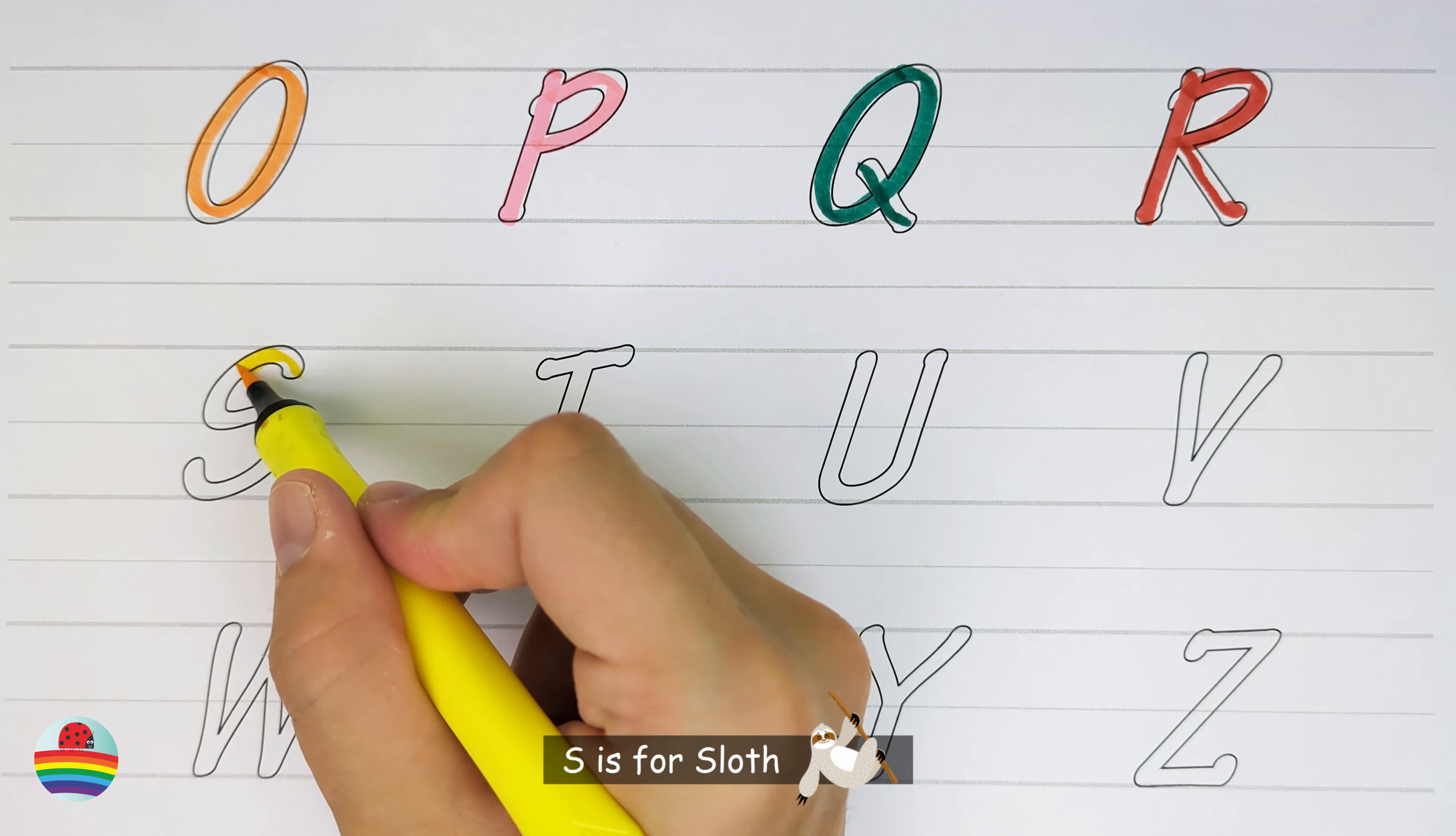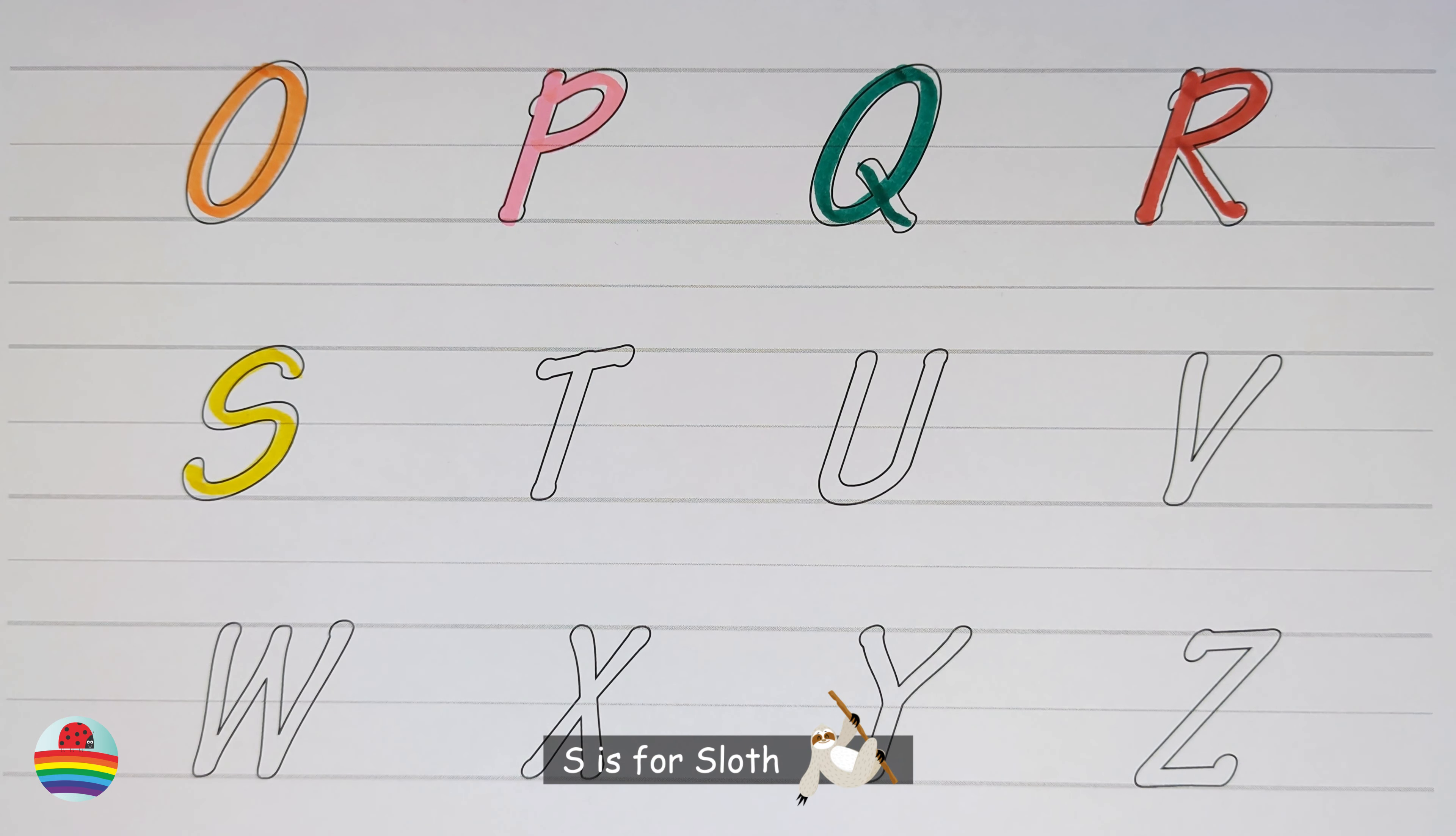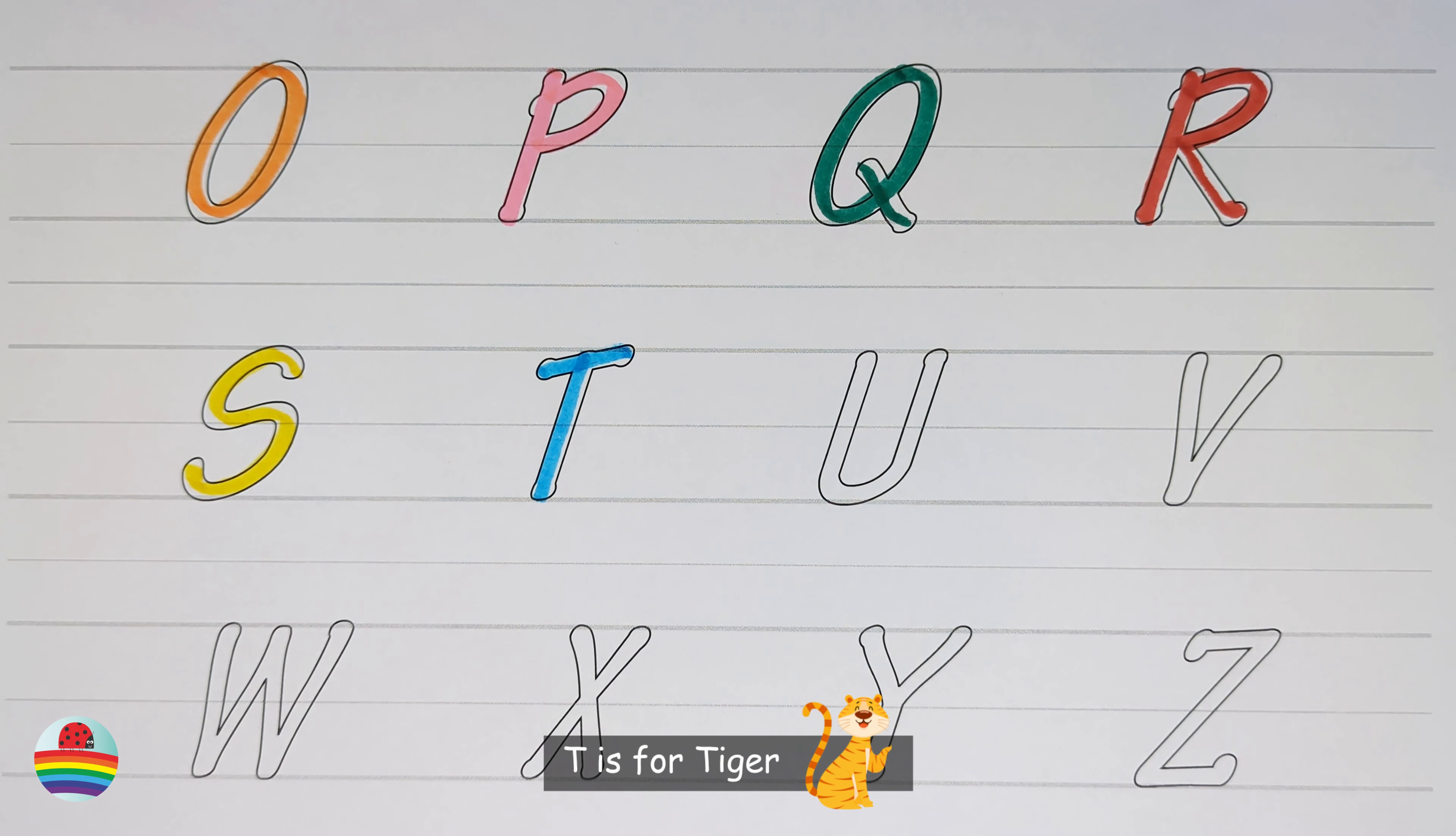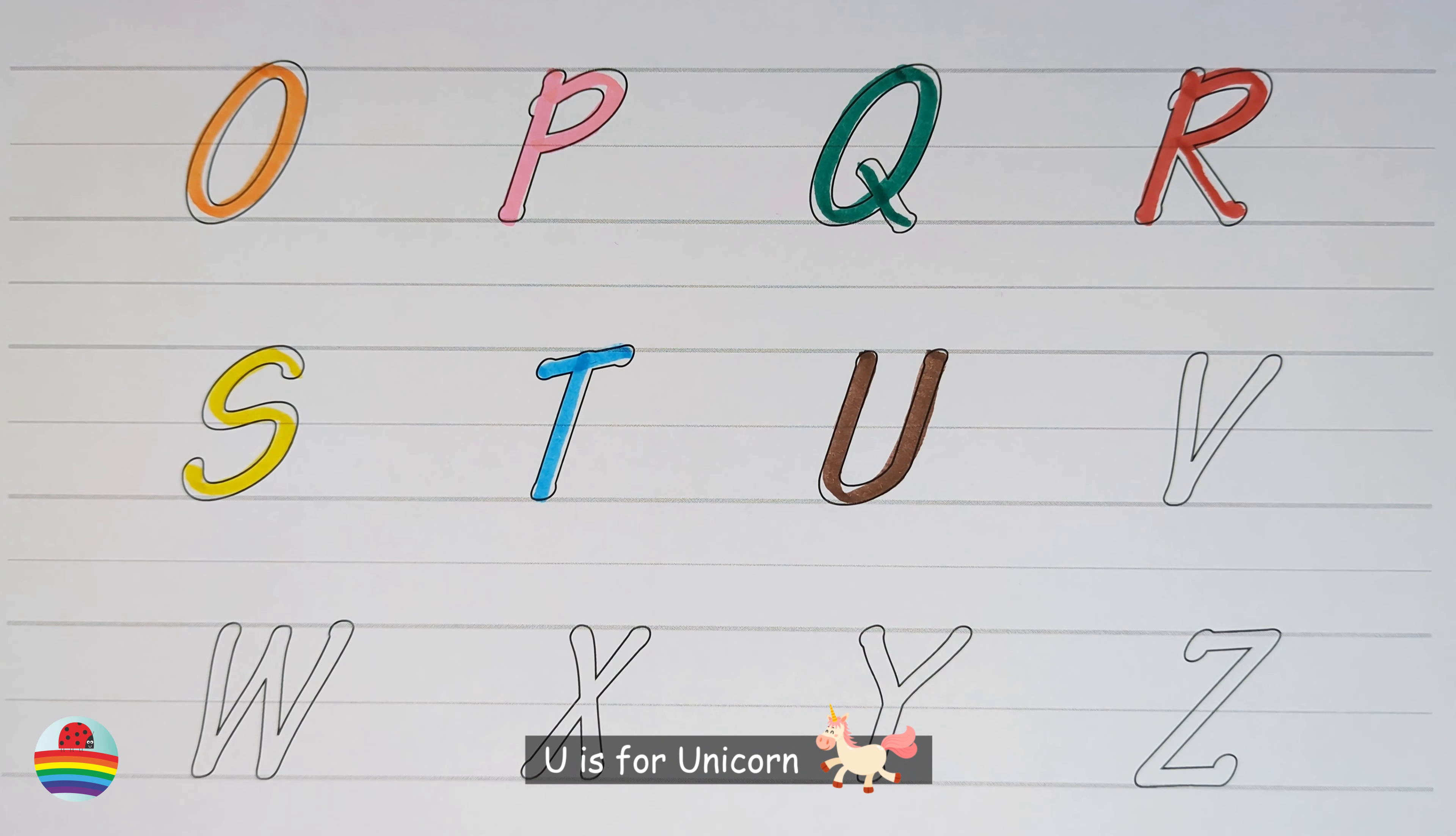S. S is for Sloth. T. T is for Tiger. U. U is for Unicorn.